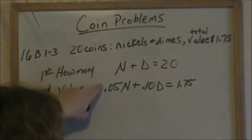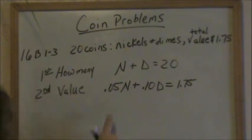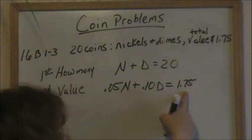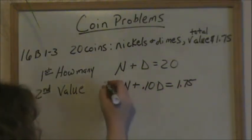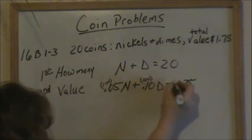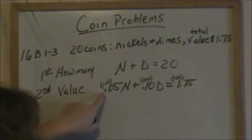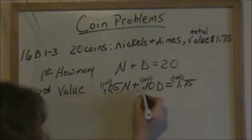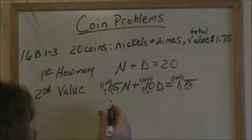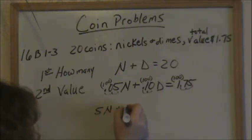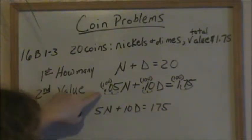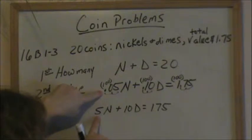Now we have our two equations and two unknowns. The first thing I would recommend is getting rid of the decimals. Everything has two decimal places, so we can multiply each number by 100 — that moves the decimal place over two times. This new equation becomes 5n plus 10d equals 175. That was the value equation, now without decimals.